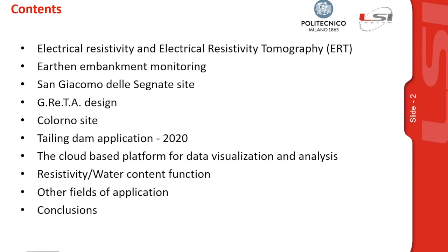These are the contents of the presentation. First, a brief description of the electrical resistivity method, which is the base methodology used by this device. Then I will explore the embankment monitoring field, which was the first area where this product was applied. After, I will describe the first two installation sites — two earthen embankments along an irrigation canal and a river: San Giacomo delle Segnate and Colorno.